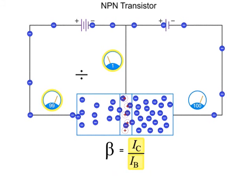So, in this example, beta would be equal to 99 milliamps, the current at the collector, divided by 1 milliamp, the current at the base, giving a beta of 99.